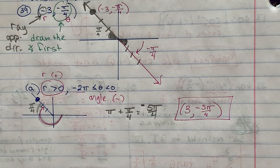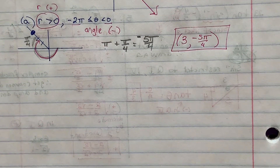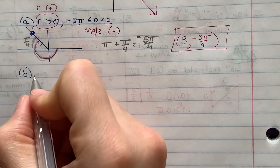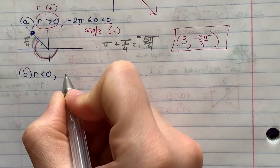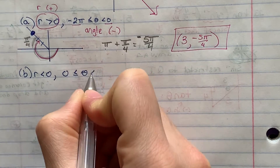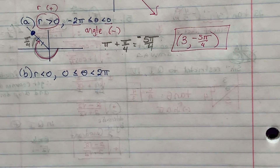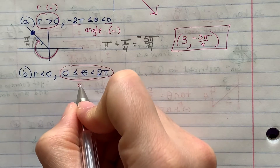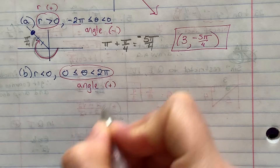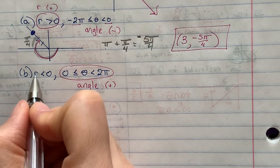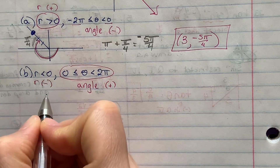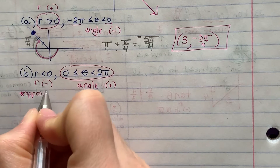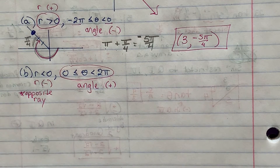That's part a. Hopefully that helped you. If it doesn't, please email me and let me know. Part b says r is less than 0 and theta this time is between 0 and 2π. So I'm going to start over and look at this theta measure. If theta is between 0 and 2π, that tells me the angle is going to be positive. And because r is less than 0, they want r to be negative, and if r is negative that's my signal that I have to use the opposite ray. Okay, so this is going to be a challenge — let's try this out.